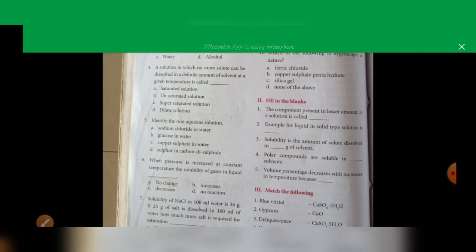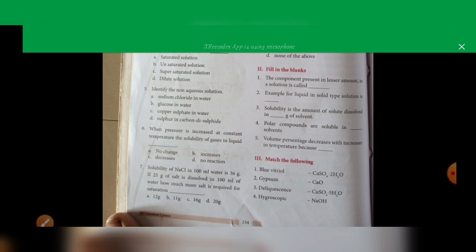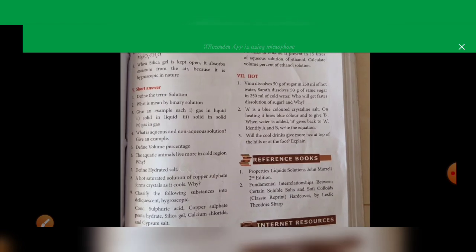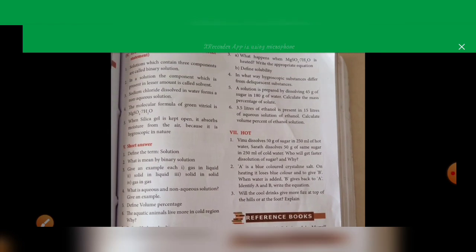Next, match the following. Blue vitriol is copper sulfate pentahydrate — CuSO4·5H2O. Gypsum is CaSO4·2H2O. Deliquescence — that is sodium hydroxide (NaOH). Hygroscopy — that is calcium oxide (CaO). The answers for match the following are 2, 4, 1, 3.